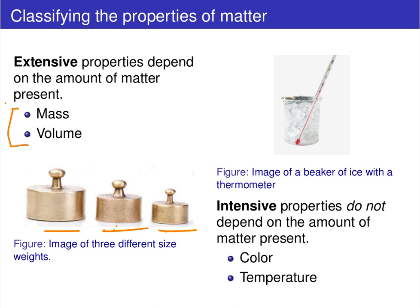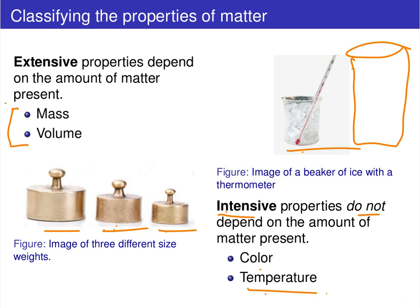Intensive properties do not depend on the amount of matter present. For example, temperature: if you have an ice bath at zero degrees Celsius, whether you have a tiny beaker or a huge bucket, that temperature stays at zero degrees — it does not depend on how much you have. Similarly with color: whether you have a little bit of blue copper crystals or a lot, the blue color remains.